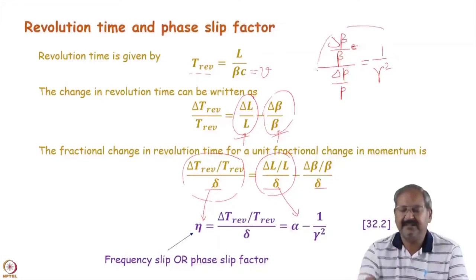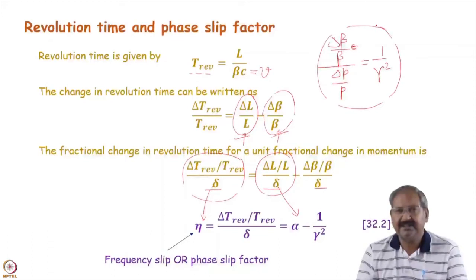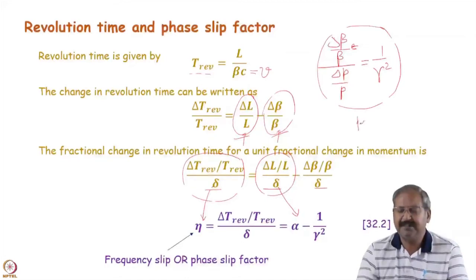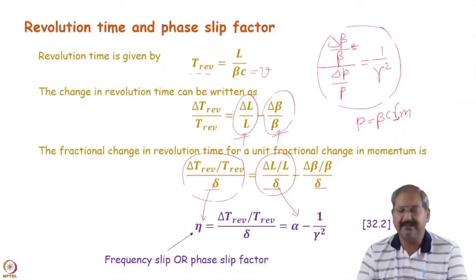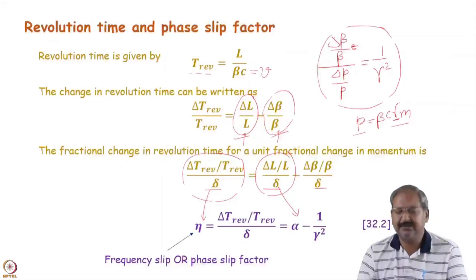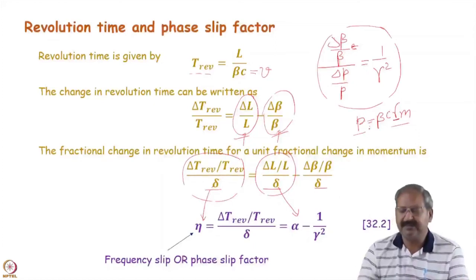To prove the relation delta beta/beta = (1/gamma^2) * delta p/p, take momentum in terms of beta: p = beta * c * gamma, and write gamma = 1 / sqrt(1 − beta^2). Express the whole equation in terms of p and beta, then calculate delta beta/beta and delta p/p by taking the logarithmic derivative. This is an exercise to prove this relation.